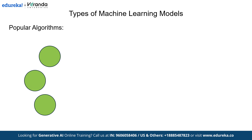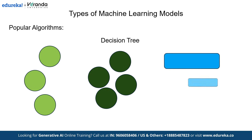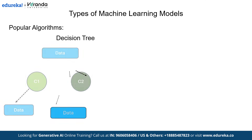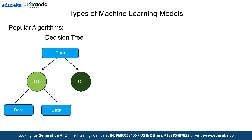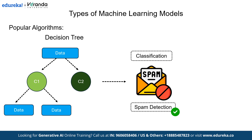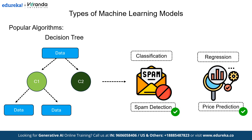First, let's discuss decision trees. These models break down data into a tree-like structure, where each node represents a decision based on a feature. They are easy to interpret and work well for both classification — for example, deciding if an email is spam — and regression, such as predicting house price. However, they can become overly complex.